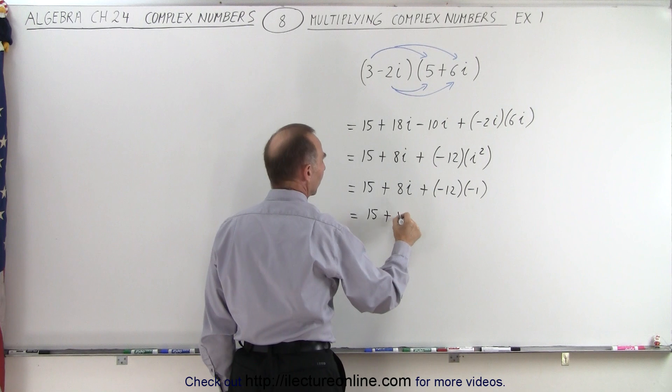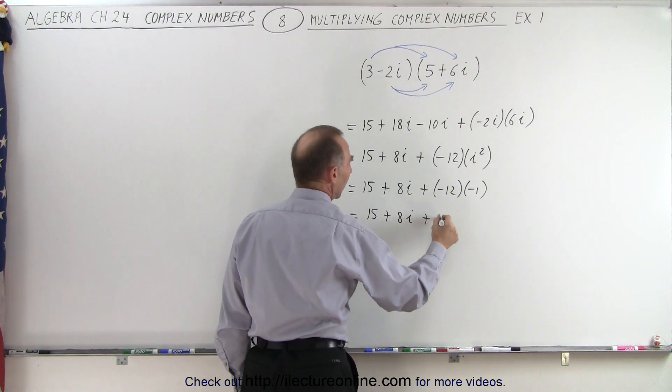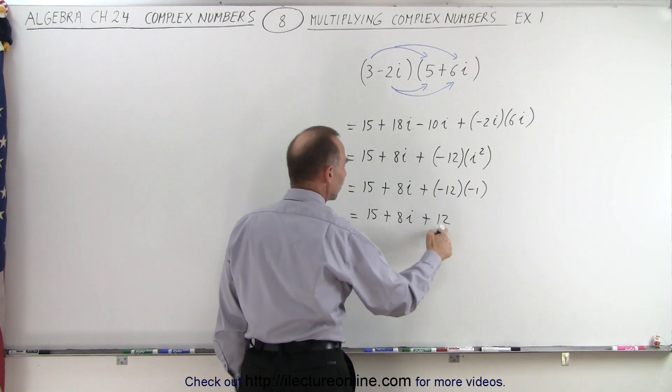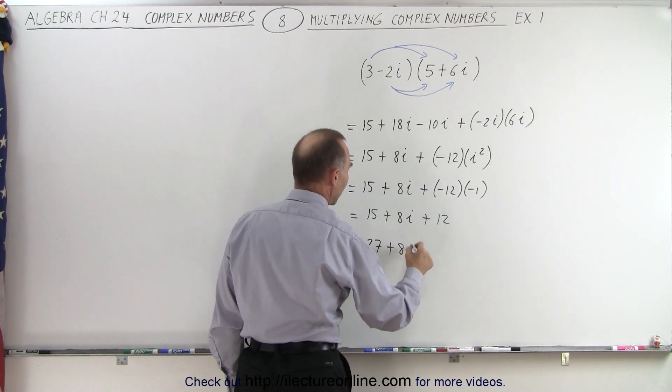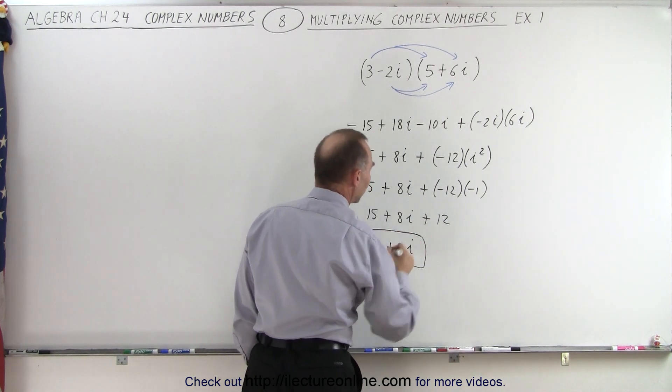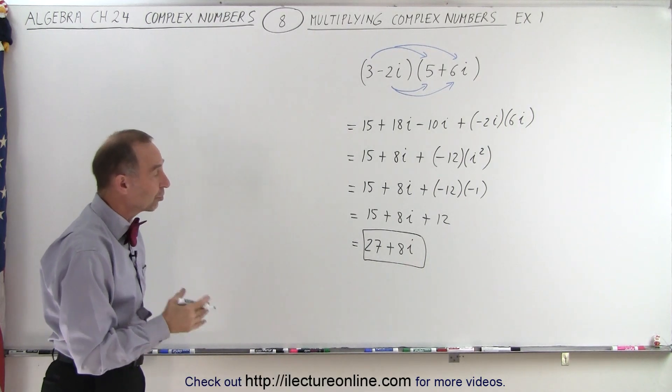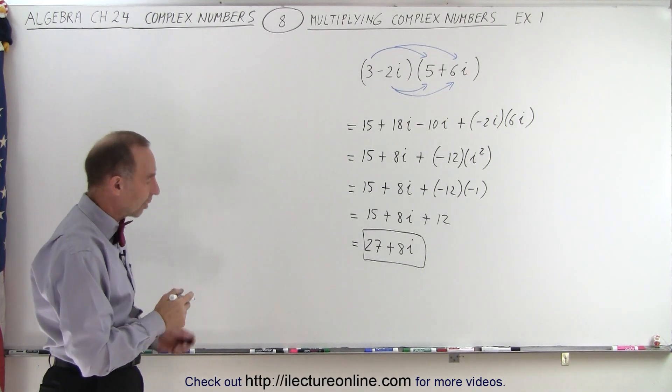So this 15 plus 8i, plus a positive 12. And then we can add 15 and 12 together. So this is equal to 27 plus 8i. So notice that the result of a product of two complex numbers gives you another complex number.